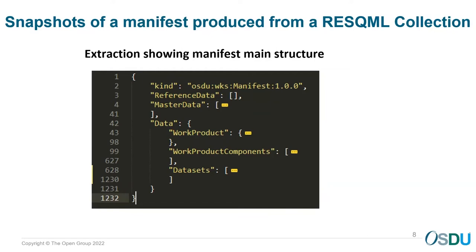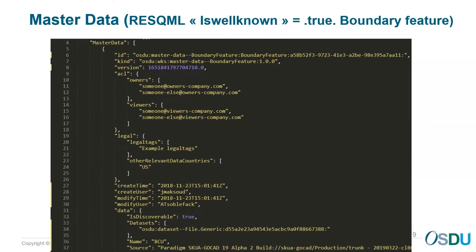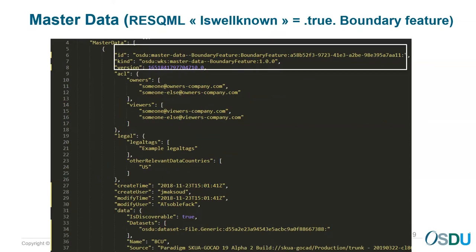I'll go through this quickly just to show you how it works — you can look more closely later. For example, you can view the master data and see the relationship between this master data and the UUID in ResQML. Any OSDU object and ResQML object share the same ID and can be cross-checked and exchanged. They also carry an identical version number to maintain a complete relationship, along with information about the data set.